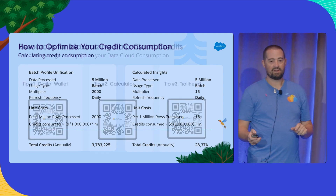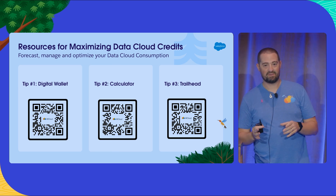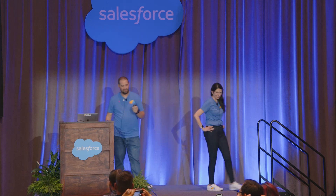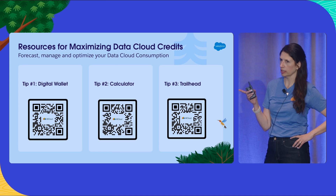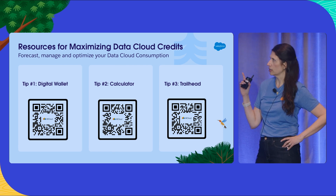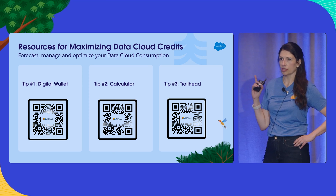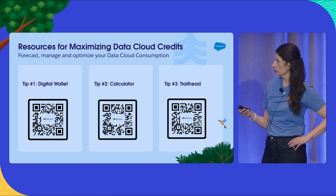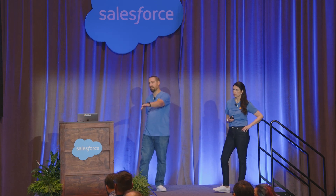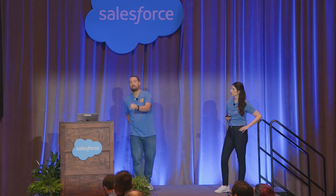We want to make your data work for you more effectively. There are a number of resources here: the calculator — definitely scan that QR code. We didn't mention it, but the digital wallet is something you'll want to get familiar with. All the content we shared is also available through Trailhead — if you haven't gone through all the Trailheads, it's a great resource. We have a mic in the room, so if you have questions, make your way to the mic in the aisle. We're happy to take your questions now, or have a side chat after the session.